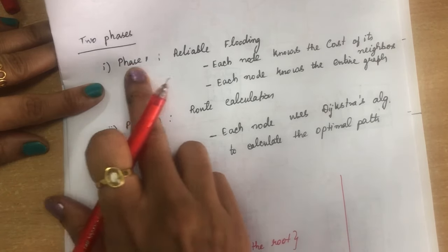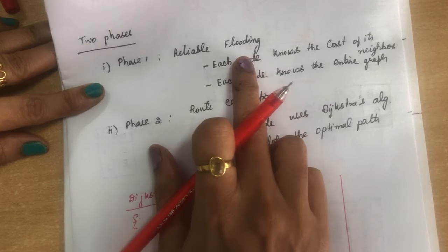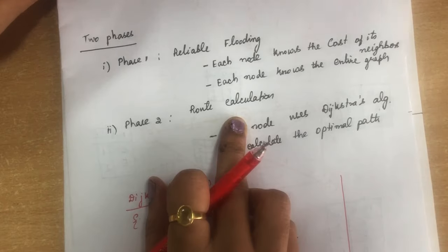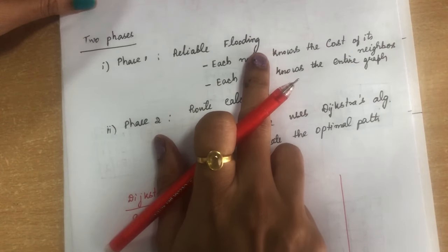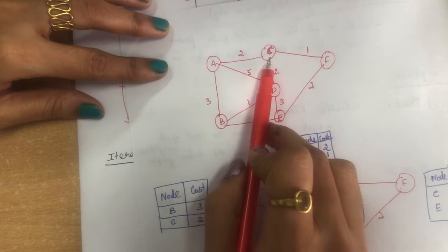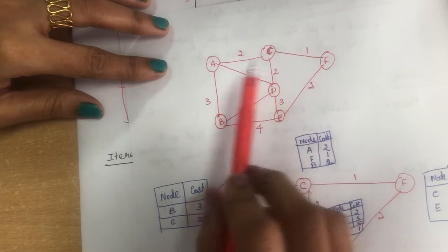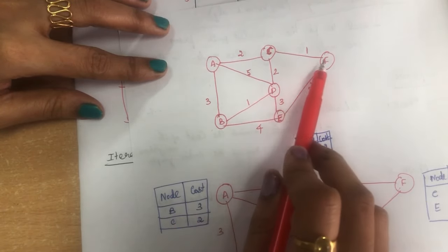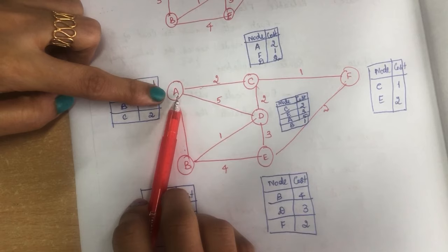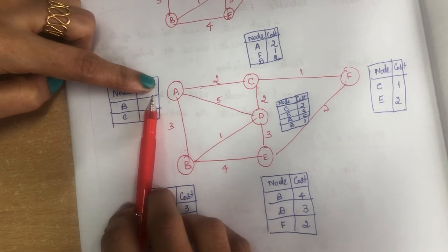So there are two phases. First, it will do flooding — the link state information is flooded across the network. Second, it uses Dijkstra's algorithm to find out the shortest path. Now let's see what link state information is. Suppose you have a network with nodes A, C, D, B, E and F — all six nodes connected with links associated with costs. The link state is the information regarding a node, its nearest neighbors, and the cost involved in connecting to those neighbors.